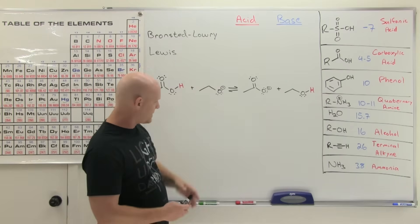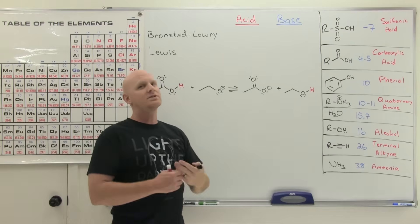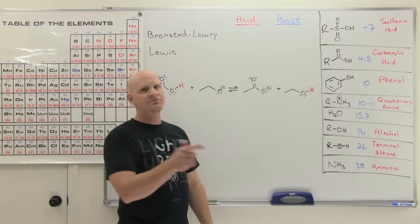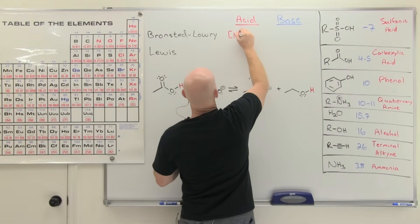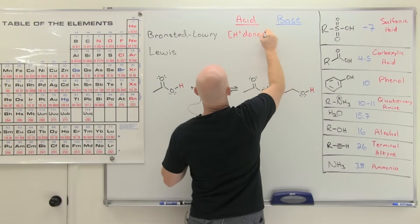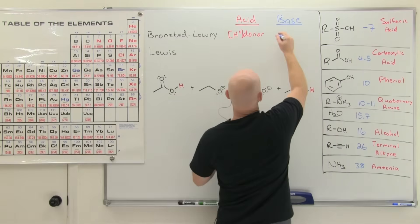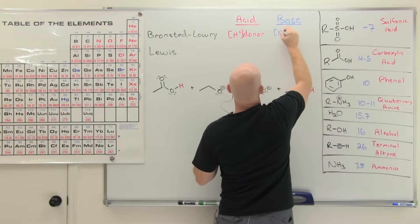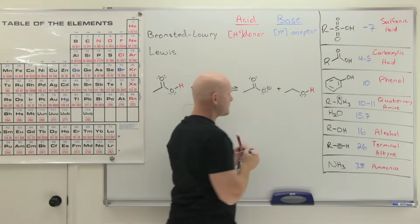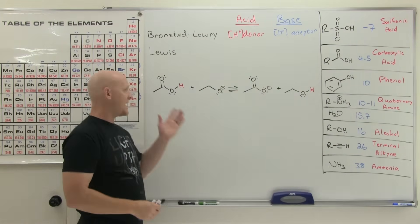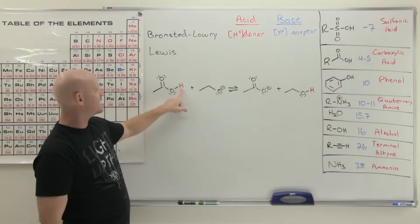Just a reminder about some definitions. Bronsted and Lowry looked at acid-base reactions as all about following the hydrogen. They looked at an acid as an H-plus donor and a base as the H-plus acceptor. In a typical acid-base reaction, you follow the H that's being given and received — that's the one highlighted in red here.